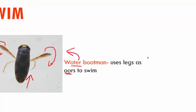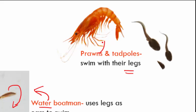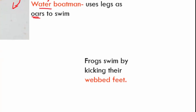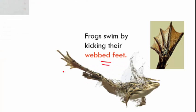Some animals use their legs to swim — for example, prawns and tadpoles use their legs to swim in water. Amphibians like frogs have webbed feet, with a flap of skin between their fingers. By kicking this flap of skin, the frog is able to swim.